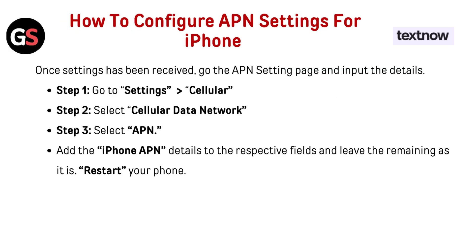How to configure APN settings for iPhone. Once the setting has been received, go to the APN settings page and input the details. Step 1: Go to Settings, then Cellular. Step 2: Select Cellular Data Network. Step 3: Select APN. Add the iPhone APN details to the respective fields and leave the remaining as is. Now restart your phone.